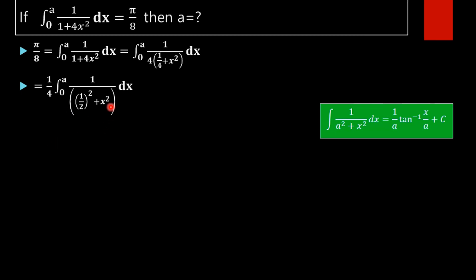Here we have an integral of the form 1/(a² + x²). The standard result is: the integral of 1/(a² + x²) dx equals (1/a) tan⁻¹(x/a) + C.